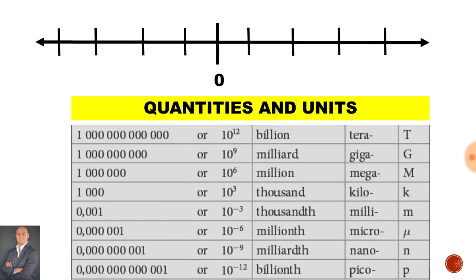Now to refresh our memory of the different quantities and units to do the calculations that are coming up. Everything to the left of the number line is positive and everything to the right of the number line is negative. 10 to the 3 is kilo.